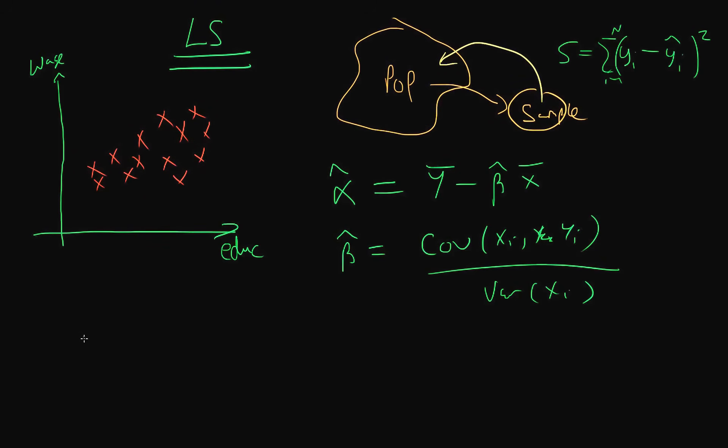What these least squares estimators are doing: if we feed in the sample data to them, alpha hat is going to output a certain value, a point estimate of the population value alpha, which we could say might be, let's say, $300. That tells us basically the intercept of our line on the Y axis. In effect, this tells us what wage rate we might expect if we had zero years of education.